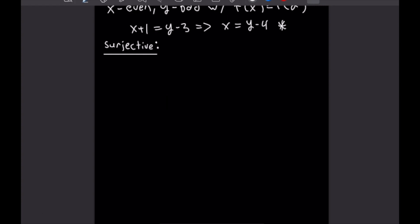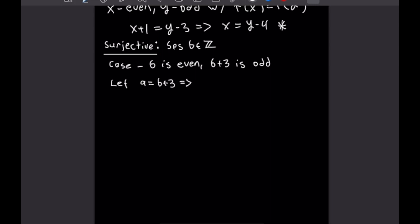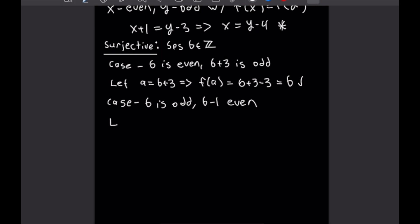Now let's talk about surjectivity. Just like before, we're going to be breaking this up into cases. Let's begin by supposing b is an integer. For our first case, b is even. If b is even, we can observe that b plus 3 will be odd. So we're going to let a equal b plus 3. That means f of a will equal b plus 3 minus 3, which equals b. That takes care of our even cases for b. Now, when b is odd, we'll know that b minus 1 is even. So we let a equal b minus 1. That means f of a is equal to b minus 1 plus 1, which is just equal to b. So no matter what, if b is even or if b is odd, we can map to it. This function is surjective.